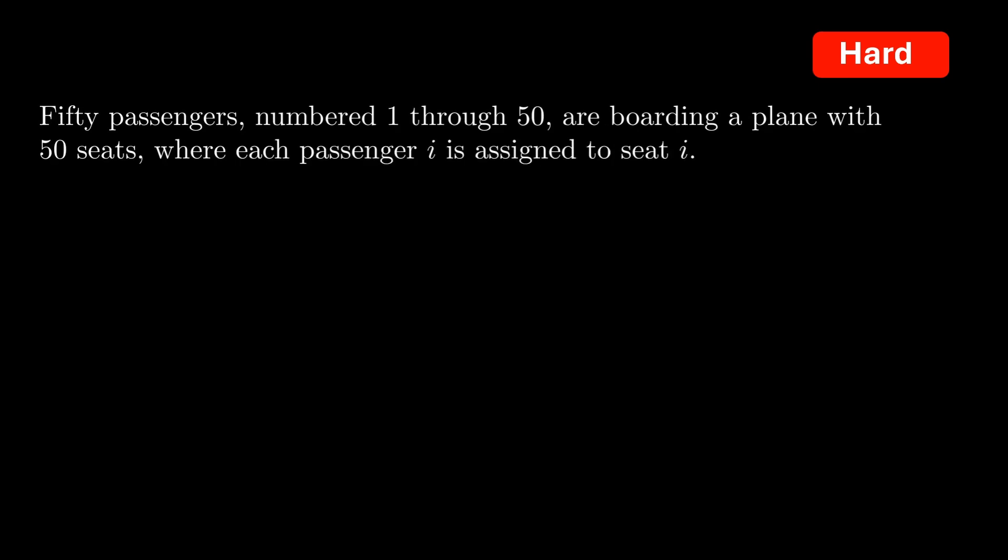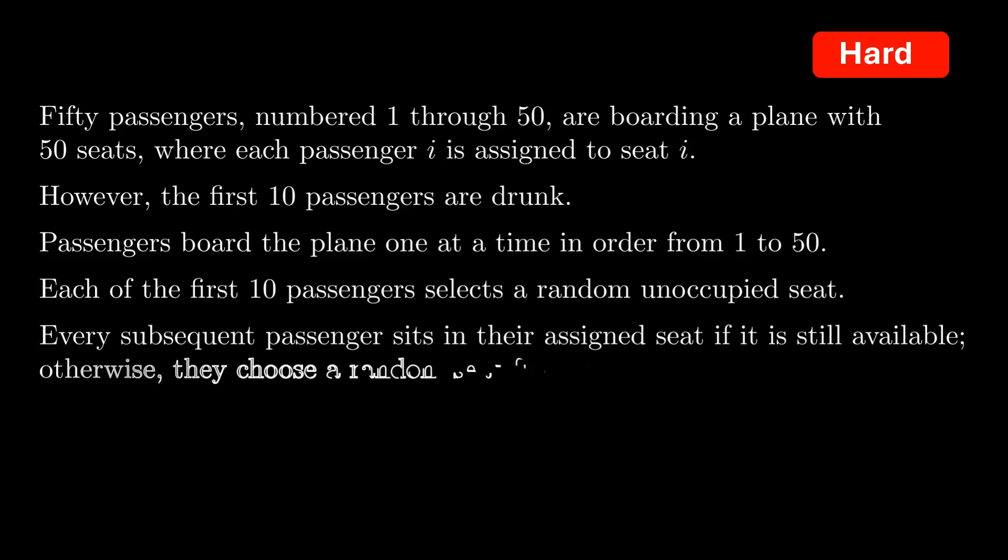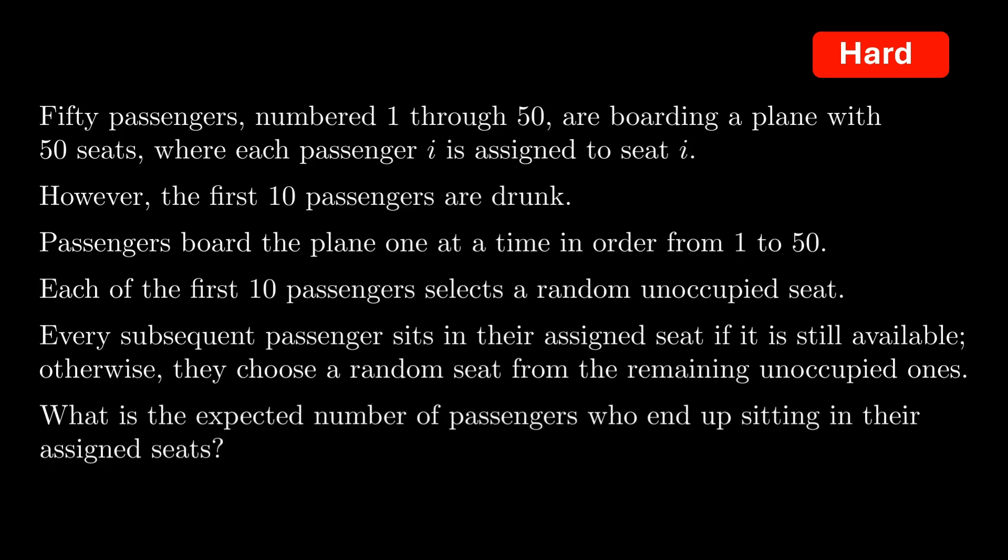Let's consider another problem. 50 passengers numbered 1 through 50 are boarding a plane with 50 seats, where each passenger i is assigned to seat i. However, the first 10 passengers are drunk. Passengers board the plane one at a time in order from 1 to 50. Each of the first 10 passengers selects a random unoccupied seat. Every subsequent passenger sits in their assigned seat if it is still available. Otherwise, they choose a random seat from the remaining unoccupied ones. So what is the expected number of passengers who end up sitting in their assigned seats? Try to solve this on your own.